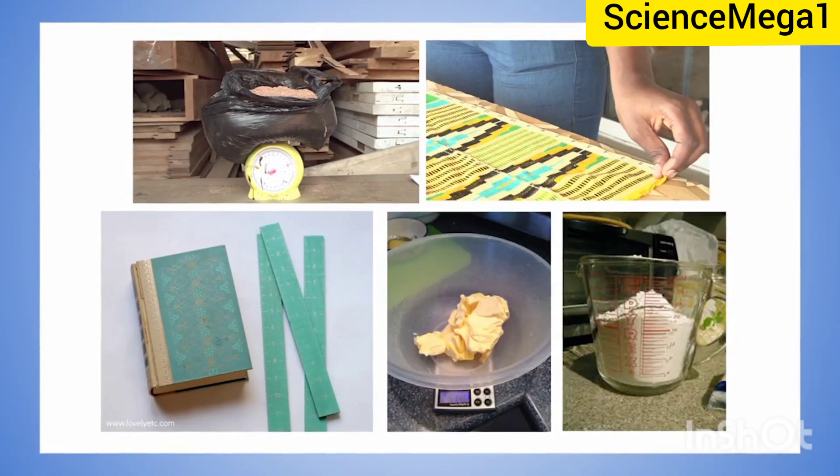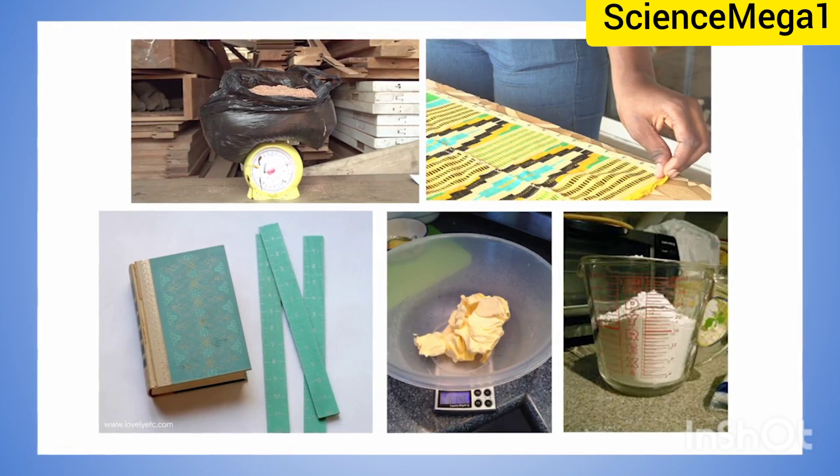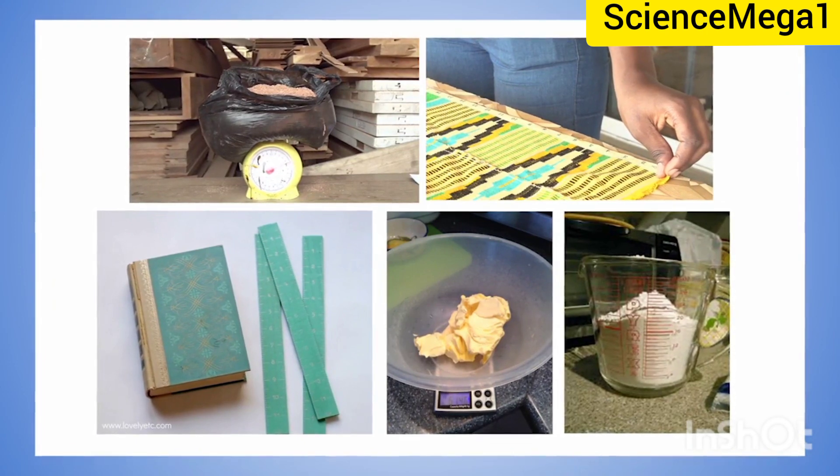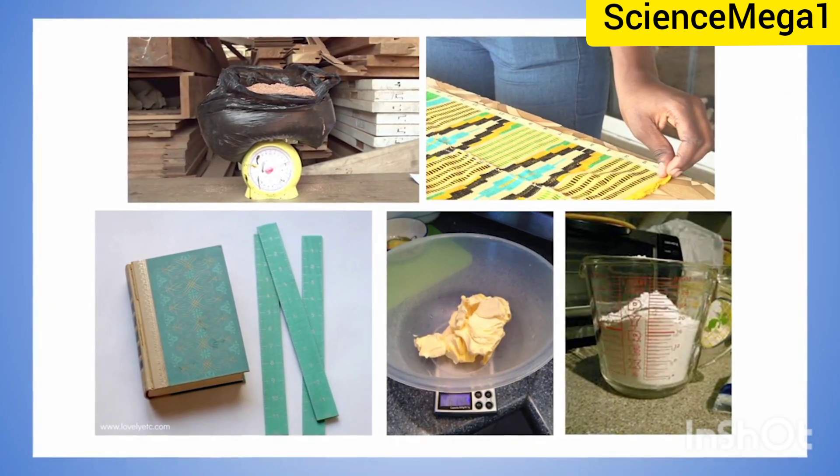For this lesson, we'll be focusing on measuring instruments for length and mass. Would you use a thermometer to measure the length of an object if you have a ruler? Certainly not. In a scientific investigation, measurements are made and the correct instrument is required for specific measurements.